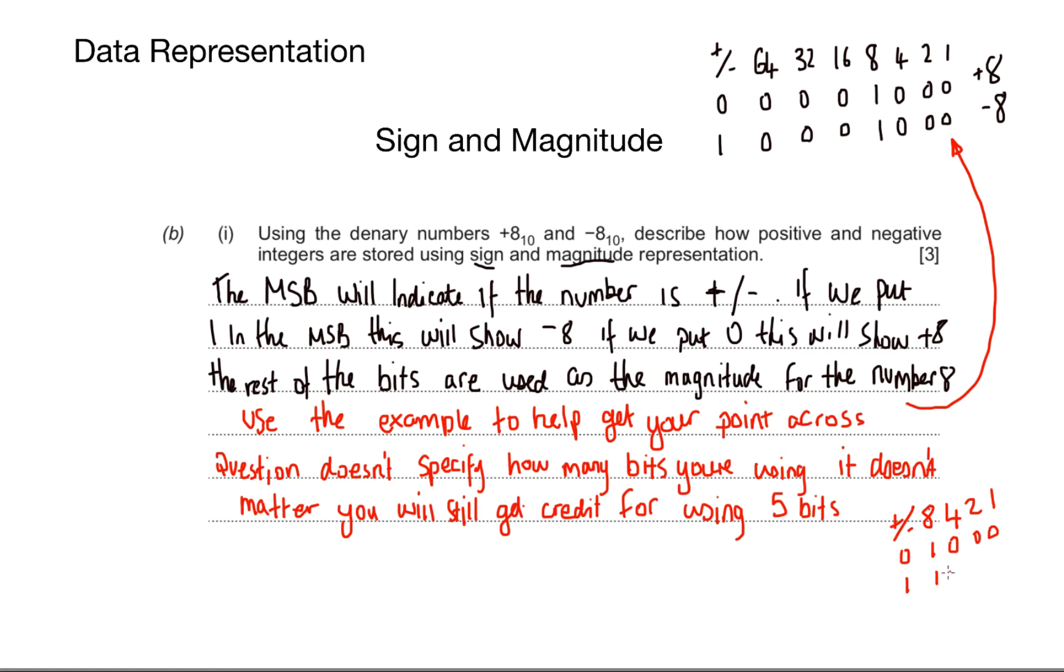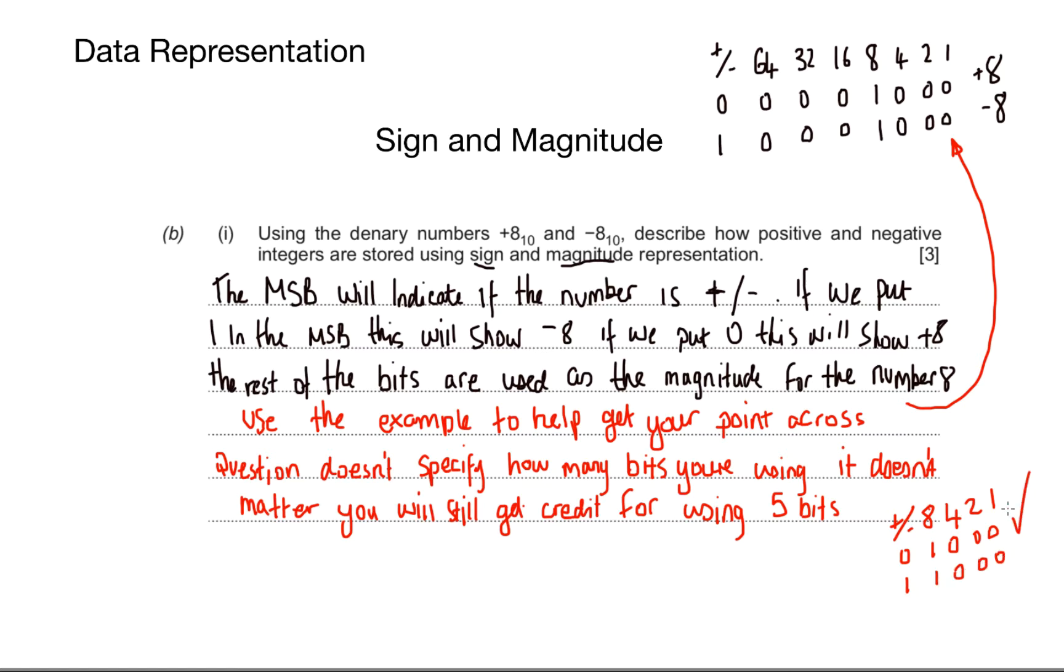That is everything we need to know about sign and magnitude representation. Now we're going to look at the other method of representing binary numbers in a negative fashion. This is called two's complement. It's used in all the computers that I know and will become really important later when we start adding binary numbers together.